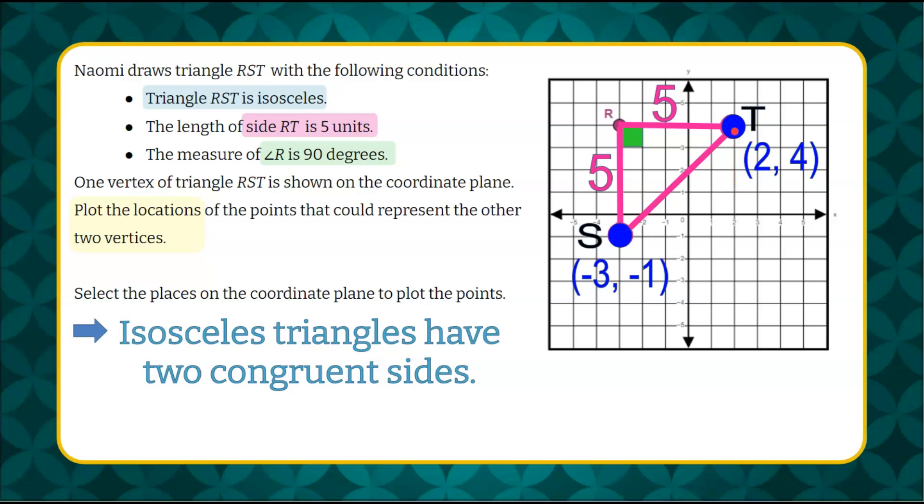So check your work. You should have plotted two points, one ordered pair at the location (2, 4), and one ordered pair at the location (-3, -1), to form triangle RST, that is a right isosceles triangle.